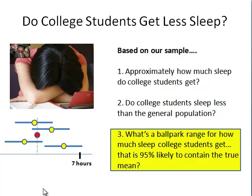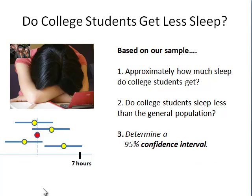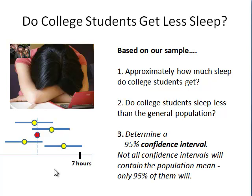On to our third question: what's a ballpark range for how much sleep college students get that's 95% likely to contain the true population mean? Specifically, we're going to determine a 95% confidence interval. A confidence interval is a range around our sample mean where we're 95% confident it contains the true population mean. Keep in mind that not all confidence intervals will contain the true population mean — about 5% of them will not.